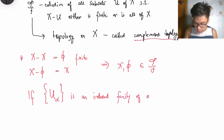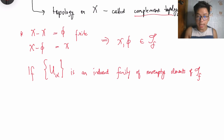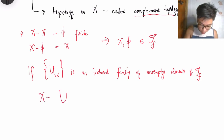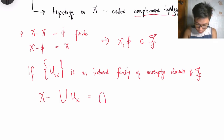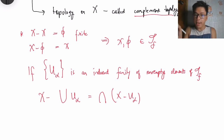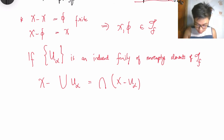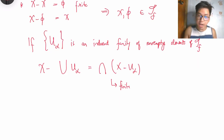If {U_alpha} is an indexed family of non-empty elements of tau sub f, we show that their union is also in tau sub f. By set theory, X minus the union of U_alpha equals the intersection of (X minus U_alpha). Since each U_alpha is in tau sub f, each X minus U_alpha is finite. The intersection of finite sets is finite, so condition two is satisfied.